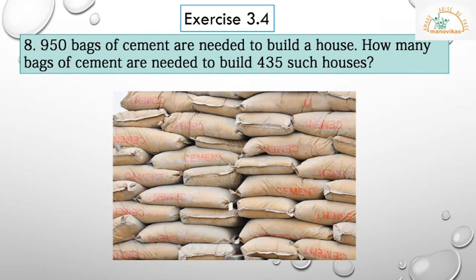Question 8: 950 bags of cement are needed to build a house. How many bags of cement are needed to build 435 such houses? To build one house, 950 bags of cement are needed. Now to build 435 such houses, how many bags of cement will be required?